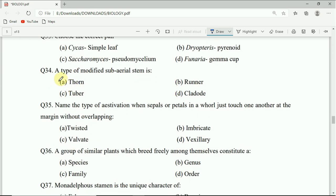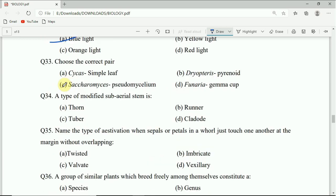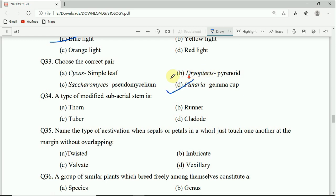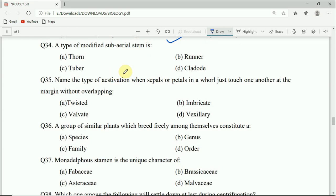Question 33: Choose the correct pair - cycad simple leaf, dryopteris pyrenoid, Saccharomyces pseudomycelium, or Funaria gemma cup. Correct answer is D.